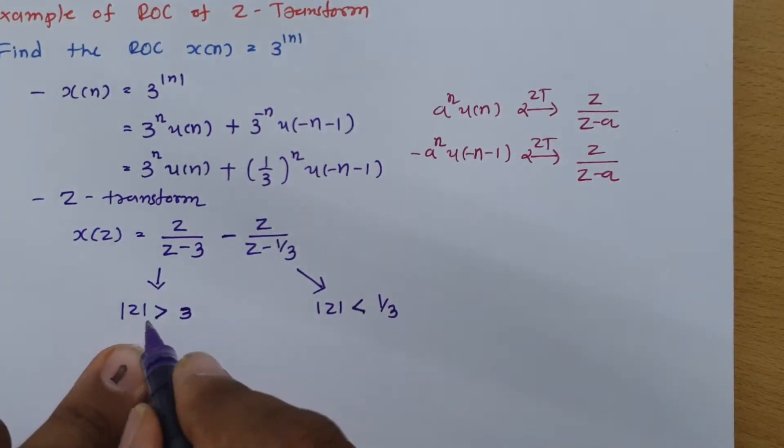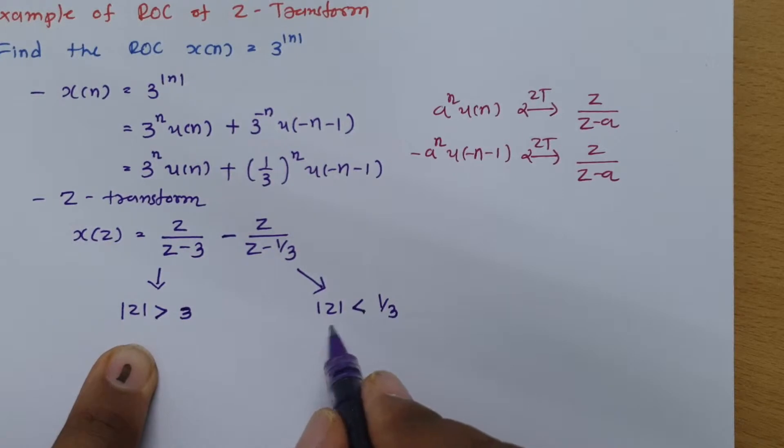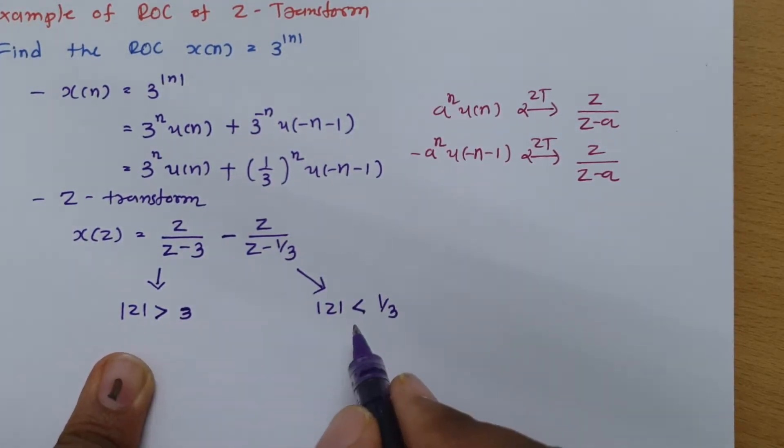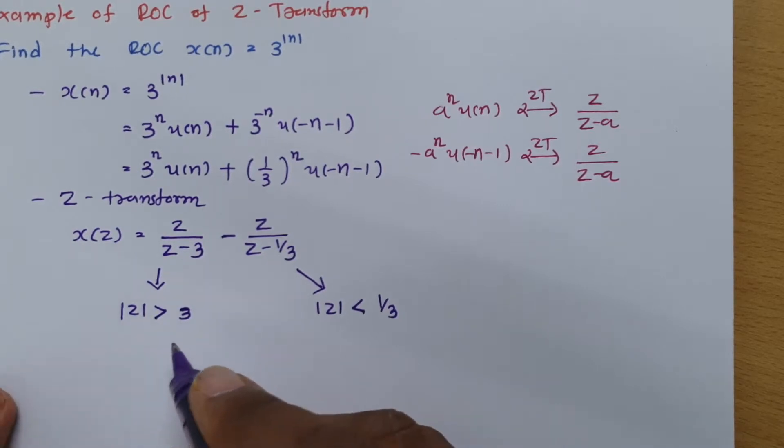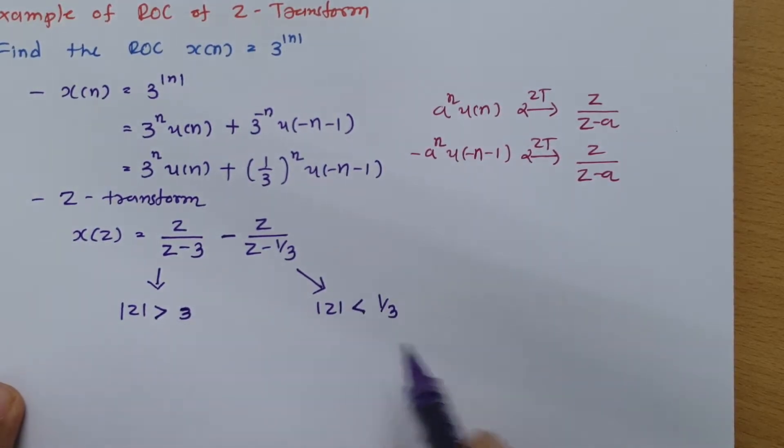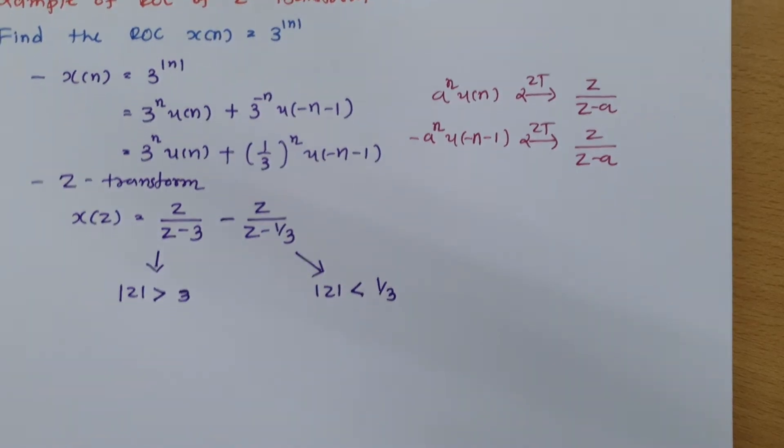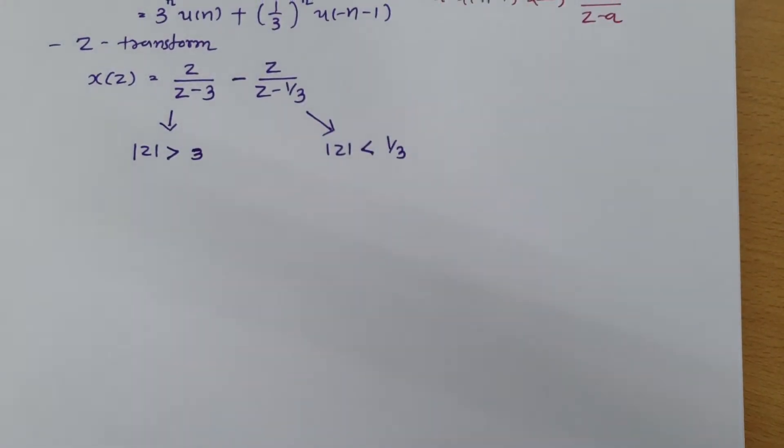So from this we have region of convergence. To plot region of convergence, we should first make the Z-plane. Based on this, I will plot the region of convergence. Let us have the Z-plane first.